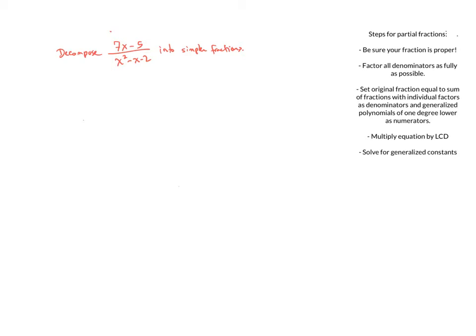The fraction is 7x minus 5 over x squared minus x minus 2. The first step is to make sure your fraction is a proper fraction — meaning the degree of the denominator is greater than the degree of the numerator. Here the degree on top is 1 and on the bottom is 2, so we are good to go. Next, factor all your denominators as fully as possible. This factors into x minus 2 and x plus 1.